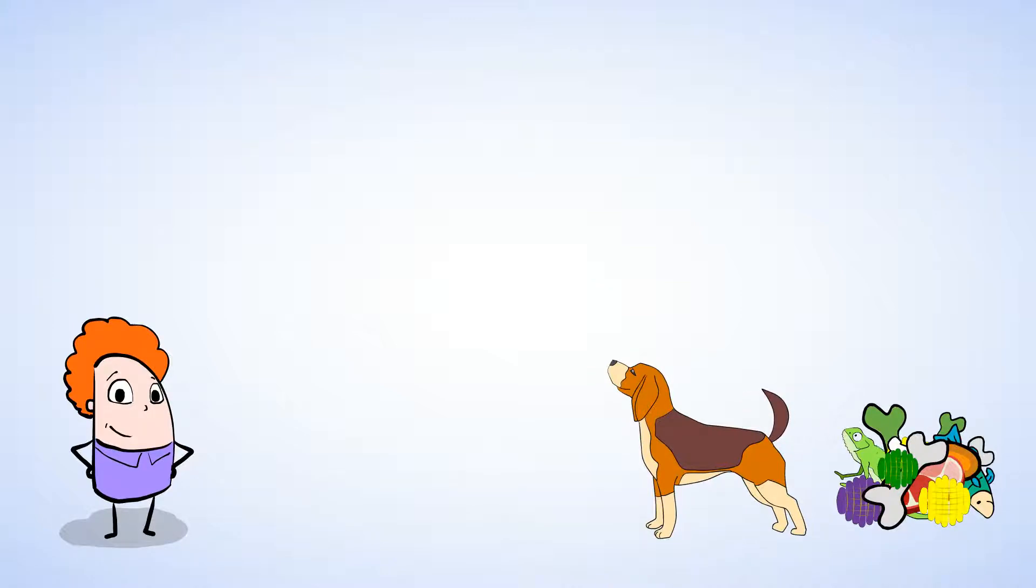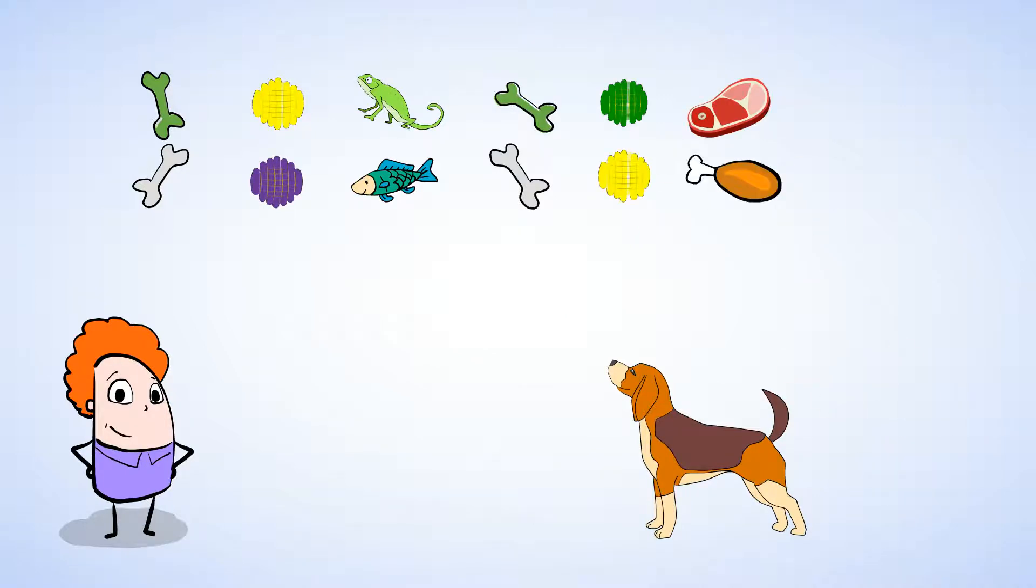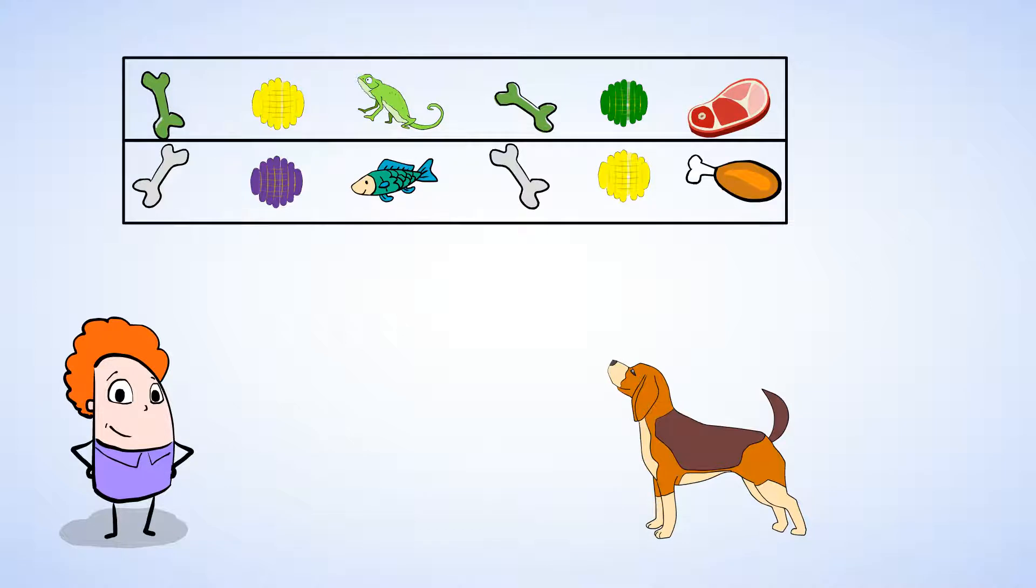I see some dog toys in the corner for my favorite pup. Okay, let's put the toys into two groups and see what we have. Now, we can put the toys into rows to stay more organized. Great!